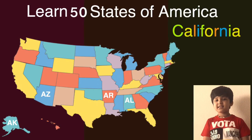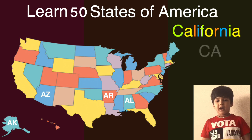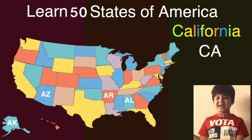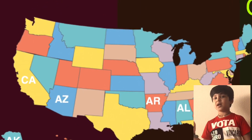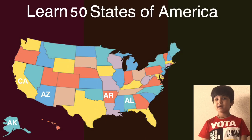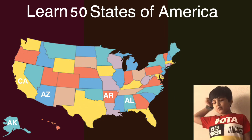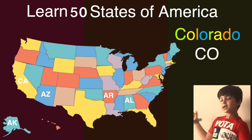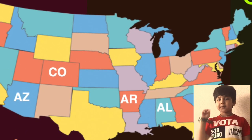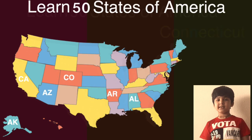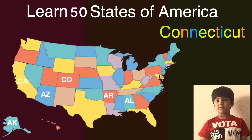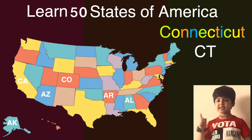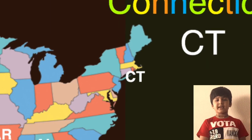The next one is California and the short one is CA. Here comes California on the map. Can you guess who will come next? The next one is Connecticut and the short one is CT. Here comes Connecticut on the map. Let's see what will come next.